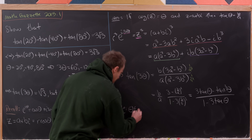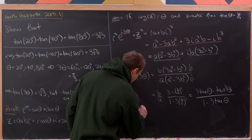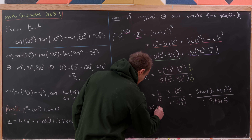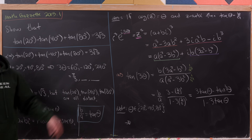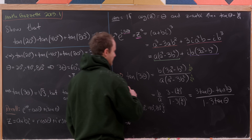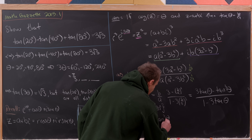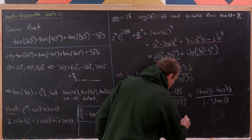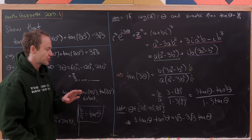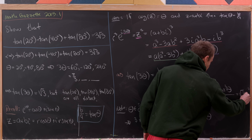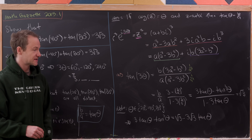Substituting into the triple angle formula and clearing the denominator, we get: 3 tan theta minus tan³ theta equals the square root of 3 minus 3 root 3 times tan² theta. This holds for each theta in our set. So tangent of 20 degrees, tangent of minus 40 degrees, and tangent of 80 degrees are all distinct solutions to the cubic polynomial equation: 3x minus x cubed equals root 3 minus 3 root 3 x squared.